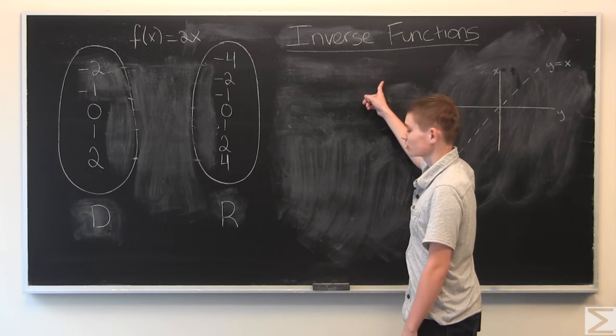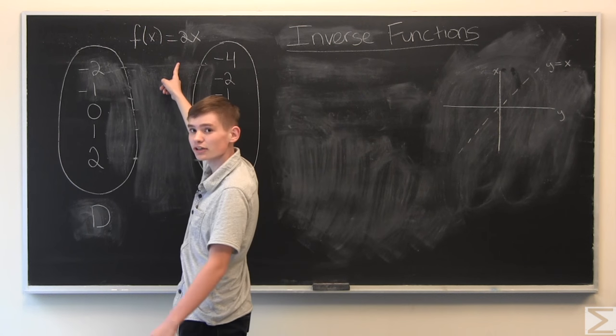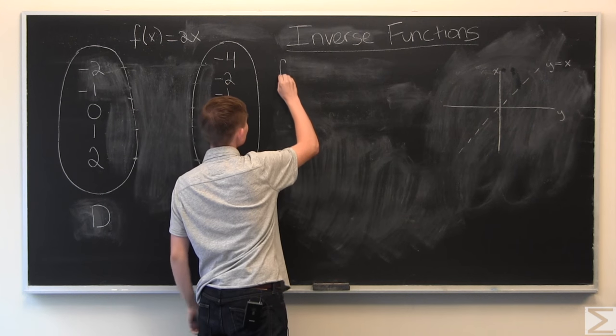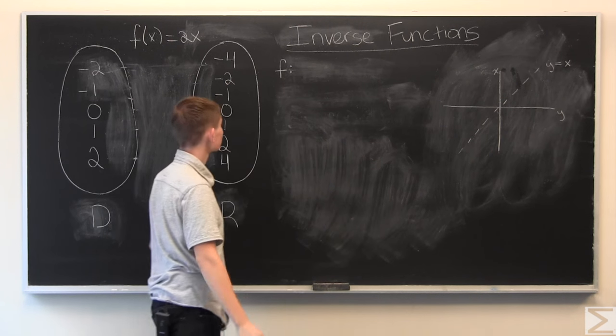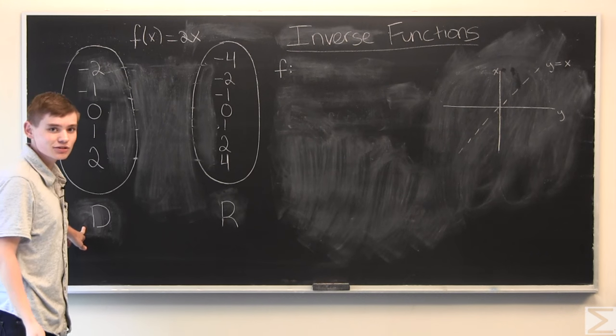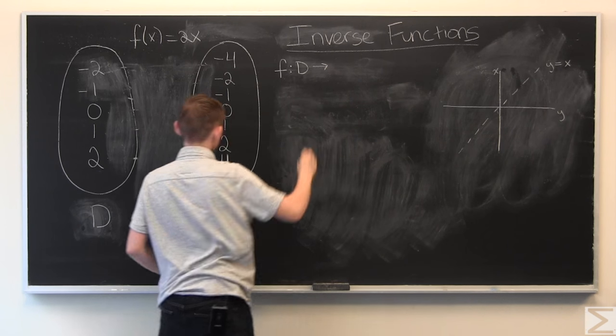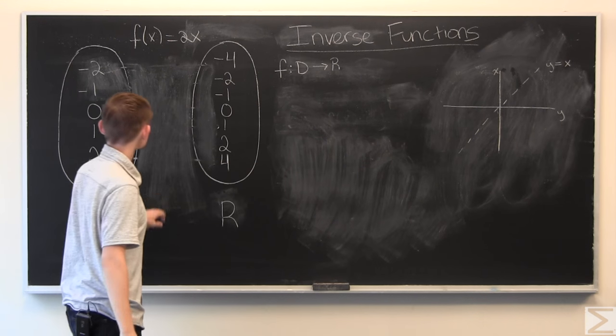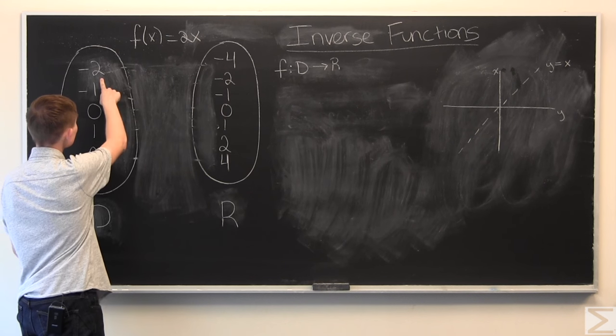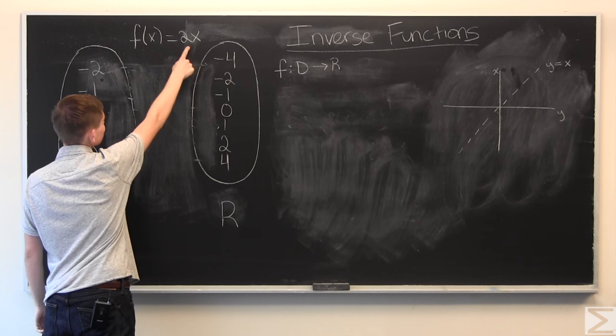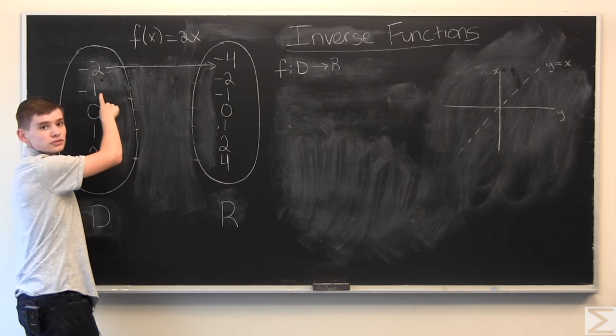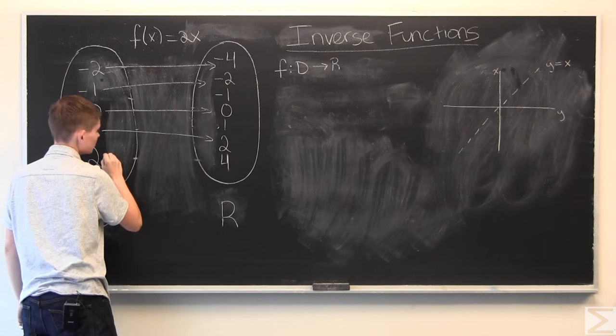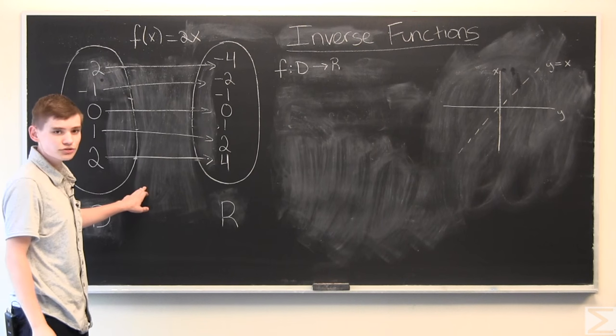All right, so inverse functions. A good place to start is just a little bit of review of regular functions. Let's take f of x equal to 2x, where f is a function that takes an input from d, which in this case is the domain, and maps it to r, which is the range. So, let's do a little bit of mapping for this. 1 goes to 2, and 2 goes to 4. So, this is a pretty straightforward mapping.